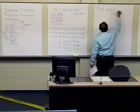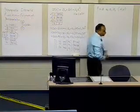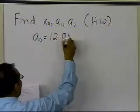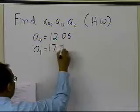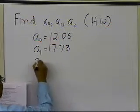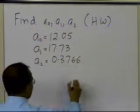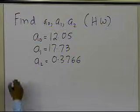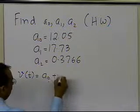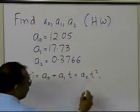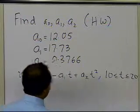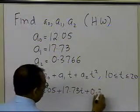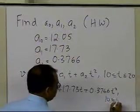After solving, you get a0 = 12.05, a1 = 17.73, and a2 = 0.3766. This makes the velocity expression: v(t) = 12.05 + 17.73t + 0.3766t², valid between t=10 and t=20.